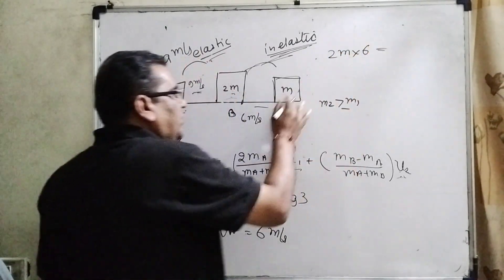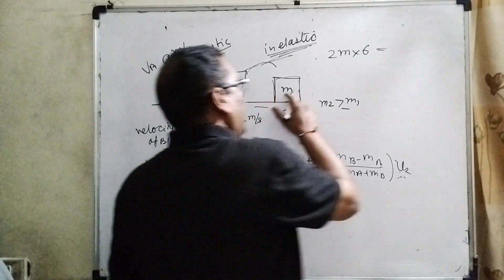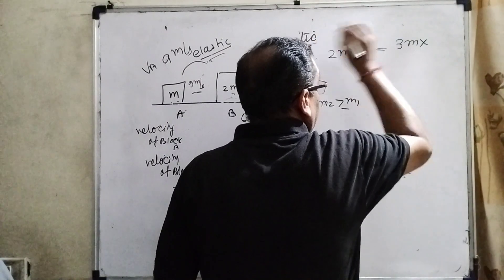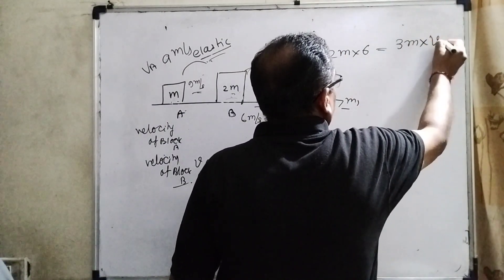And after collision they will stick together. So 2M and M become 3M and its velocity is VC.